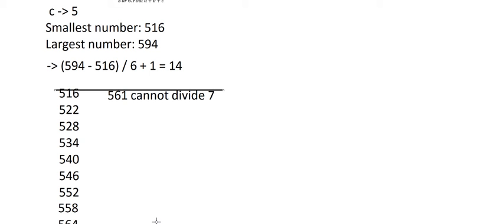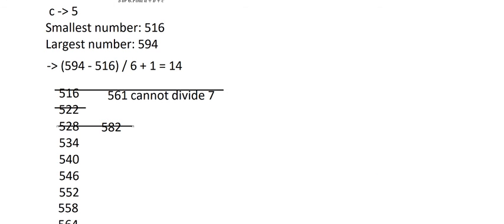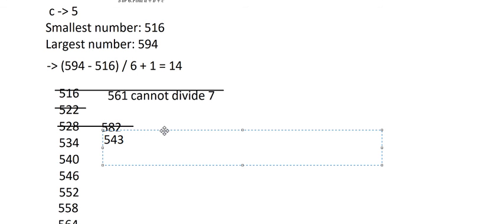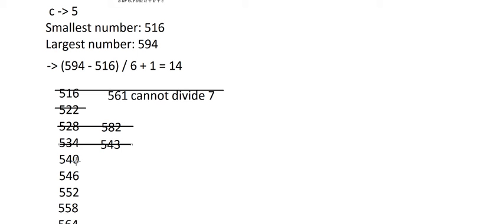522 — swapping gives 522 rearranged — cannot divide by 7, so we reject it. 528 — swapping gives 582 — 582 cannot divide by 7, so we reject that. 534 — swapping gives 543 — we check but this cannot divide, and it also repeats 0, so we reject this one too.